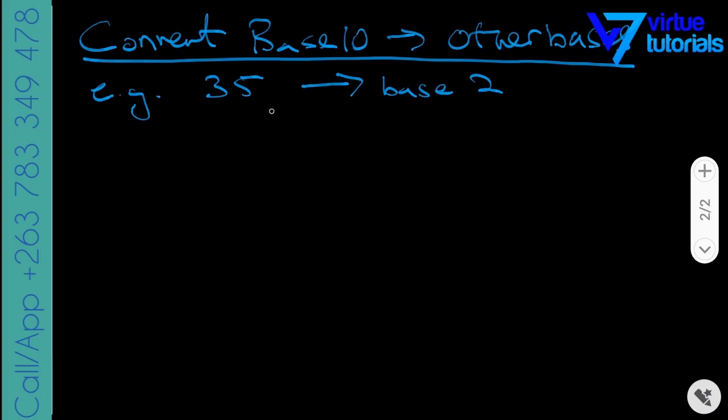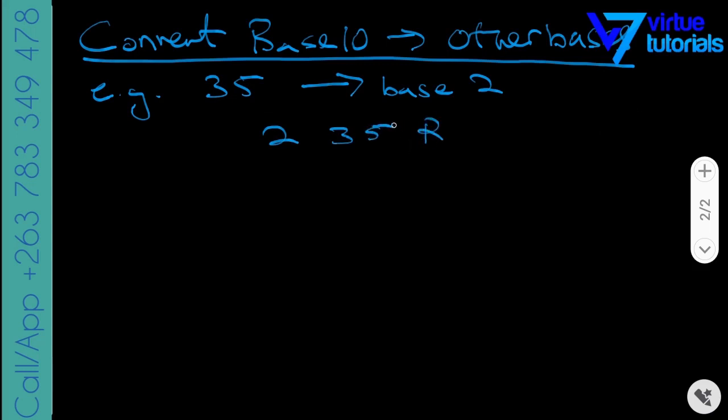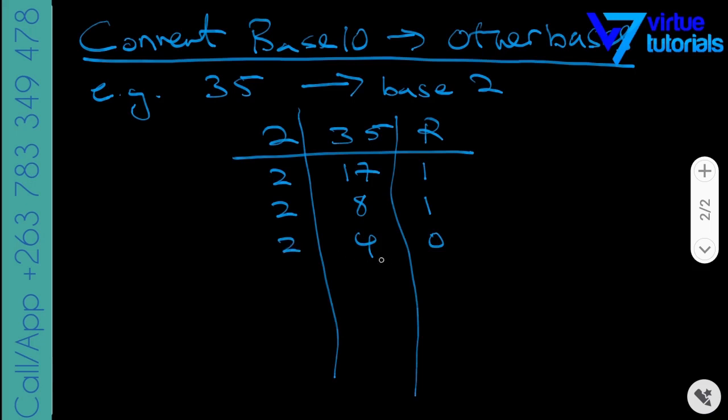Record remainders at each stage. So I'll have three columns: 2, 35, and then record, and then have three columns there. So 2 into 35, that's 17 remainder 1. 2 into 17, that's 8 remainder 1. 2 into 8, that's 4 remainder 0. 2 into 4, that's 2 remainder 0. 2 into 2, that's 1 remainder 0. Then 2 into 1, that's 0 remainder 1. When you get your number in the remainder column, you have to read this number from bottom going upwards. So if I have 35, my answer for 35 in base 2 would be 100011 in base 2.